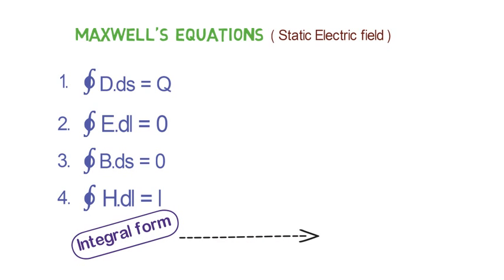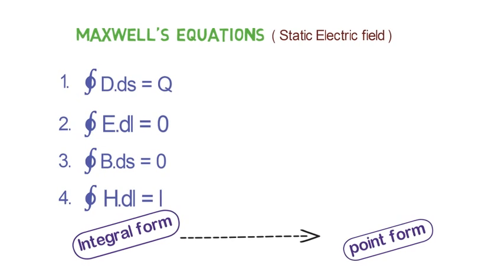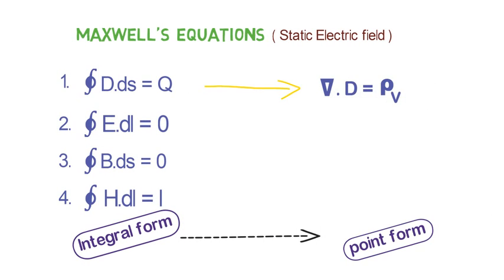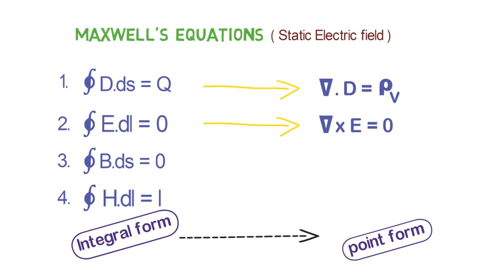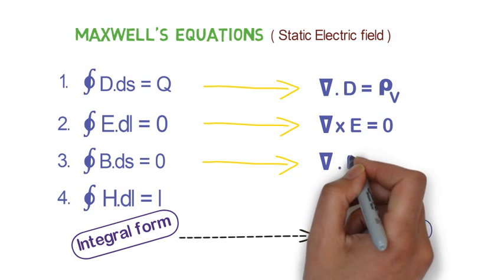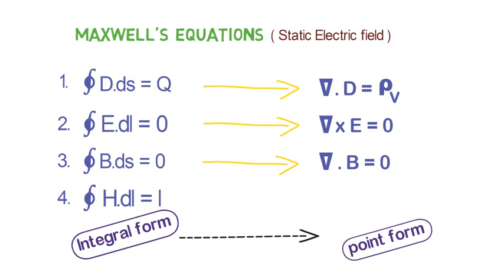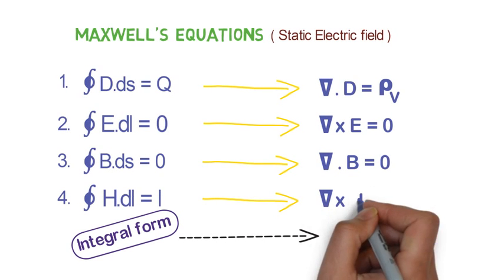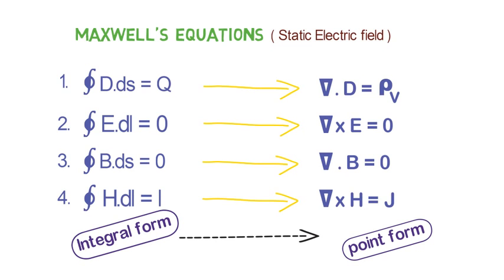We can also express these four equations in point form. In point form, the first equation becomes the divergence of D equal to ρV, where ρV is volume charge density. The second equation becomes the curl of E equal to 0, meaning the electric field is irrotational. The third equation becomes the divergence of B equal to 0, which means the magnetic field is solenoidal. The fourth equation becomes the curl of H equal to J, where J is current density.